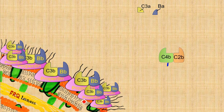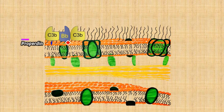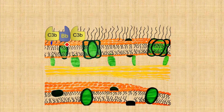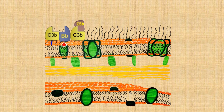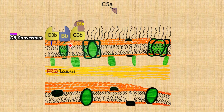Apart from opsonization, there is another option. The C3b-Bb complex, stabilized by Properdin, can also bind with another C3b to form a larger complex. This new complex has the ability to cleave C5 into C5b (larger) and C5a (smaller). Because it converts C5 into its subunits, this complex is called the C5 convertase of the alternative pathway.